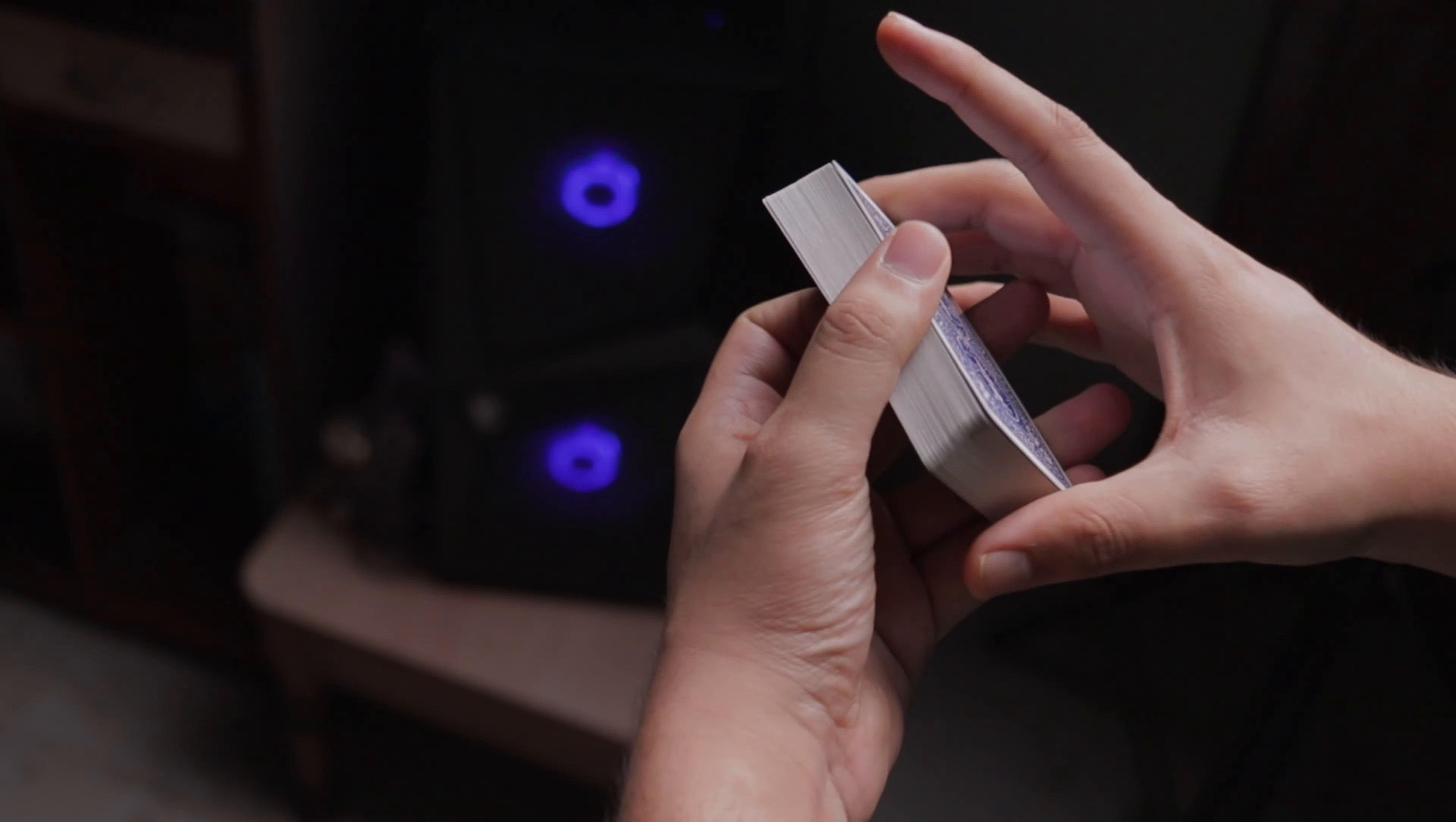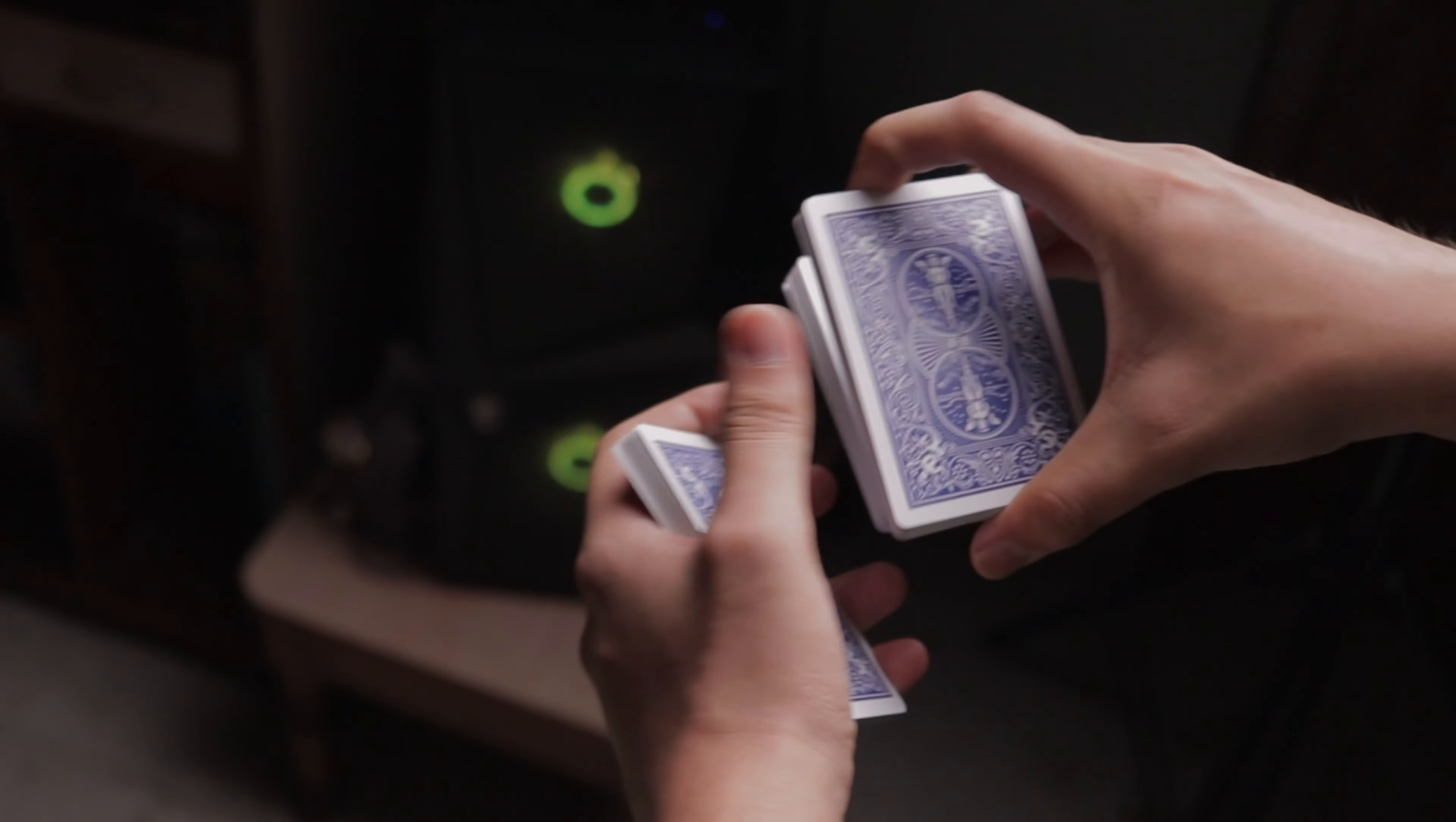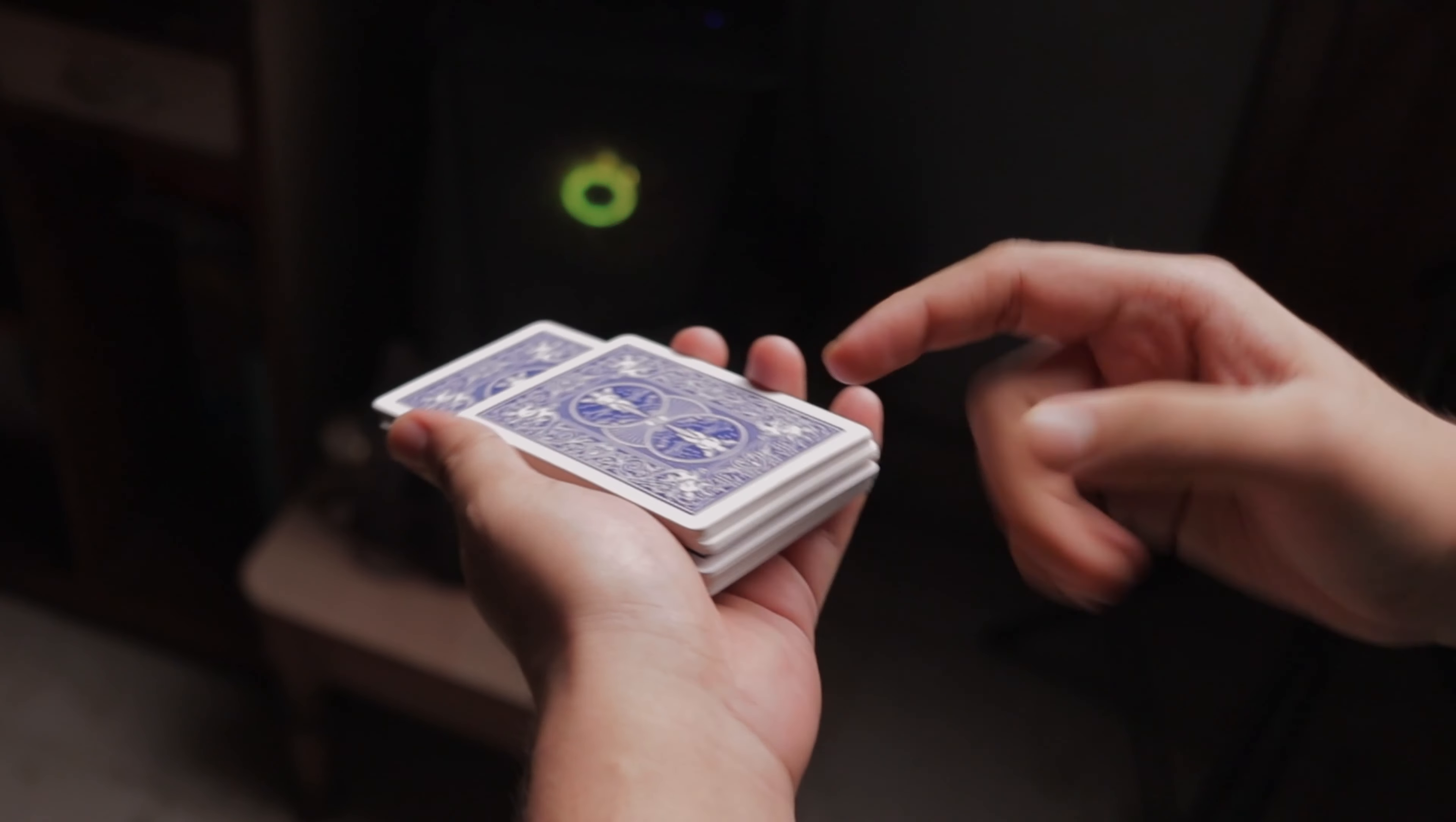So this is how you're going to do this entire false cut. First, it's very easy actually. First, all you have to do is a swing cut. Then you're going to do another swing cut, but this time you're going to leave that packet out-jogged. And on the third time, you're going to keep this last packet on top aligned with the bottom packet.